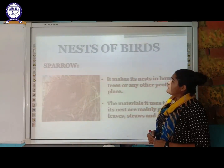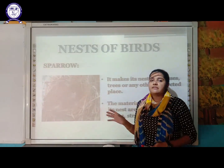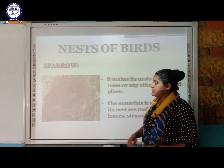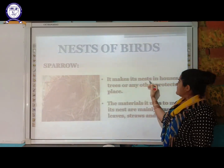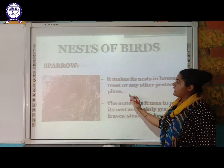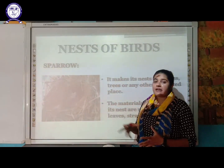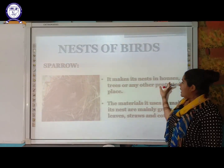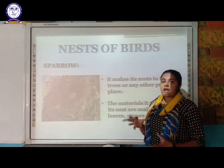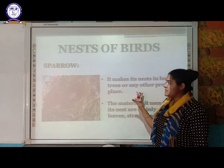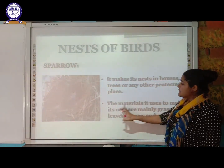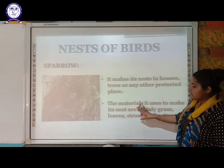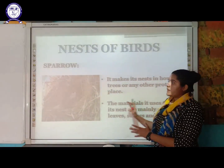The sparrow makes its nest in houses, trees, and other protected areas. The materials it uses are mainly grasses, leaves, straw, and cotton — these are simple materials required to make their nest.